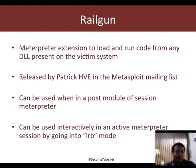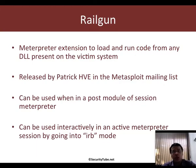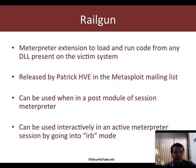Railgun is a Meterpreter extension that allows you to load and run code from any DLL present on the victim system. This can be native DLLs which ship with Windows, something you may upload on the victim system, or DLLs which are available with installed application programs. Railgun was released by Patrick in the Metasploit mailing list and since then has had a high rate of adoption among people writing Meterpreter scripts in the community.